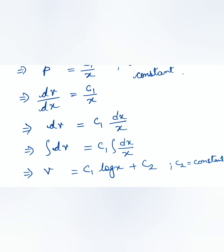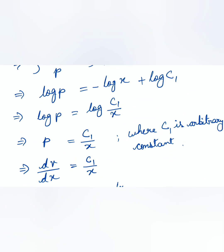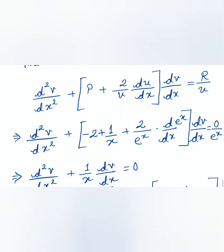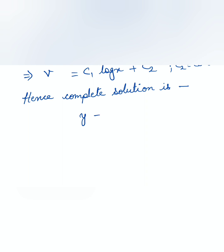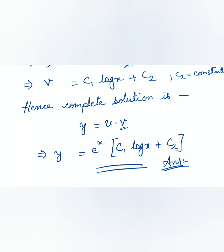We are now in the last phase. The complete solution is y = uv, where u = e^x and v = c₁ log x + c₂. Therefore, y = e^x (c₁ log x + c₂), where c₁ and c₂ are arbitrary constants. In this way the order of a differential equation is reduced and the solution is found. Hope you have understood it. Thank you students.